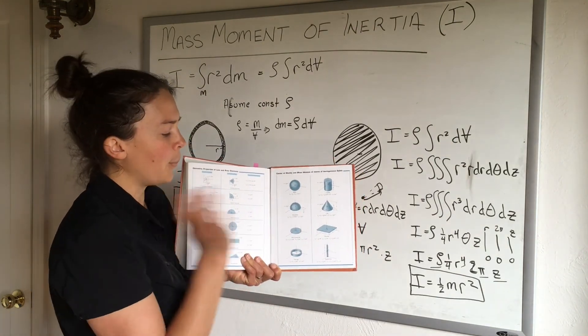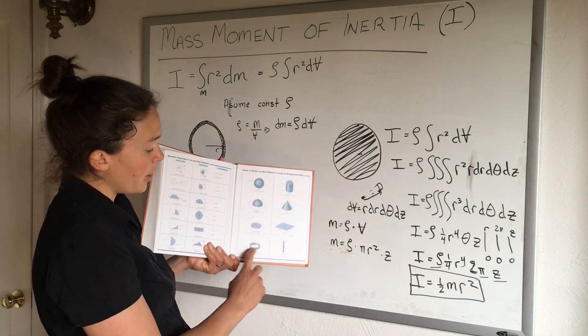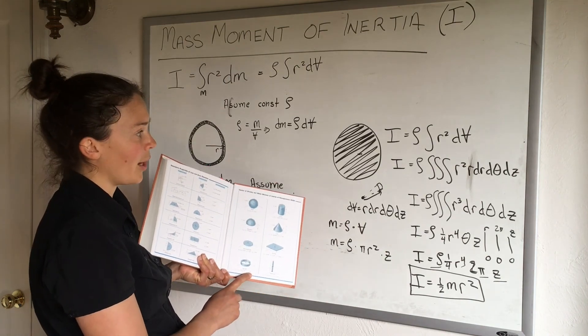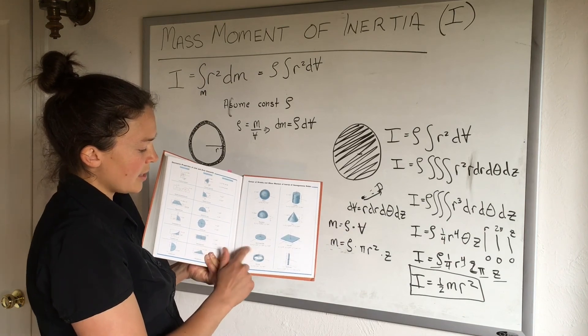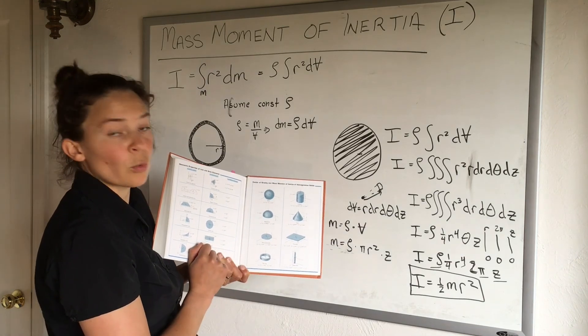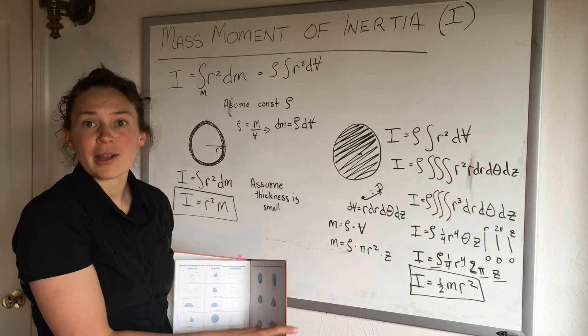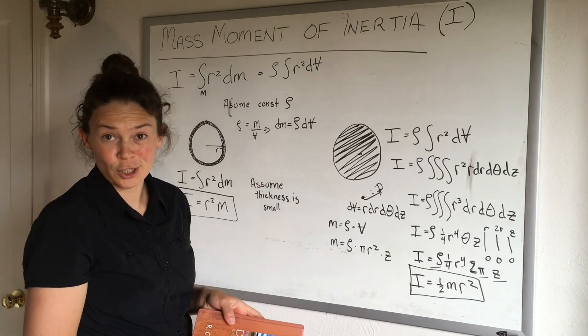So you can see the thin ring—it says the mass moment of inertia is mr²—and for the cylindrical disc or circular disc it says the mass moment of inertia is (1/2)mr². So they agree with the same answers I got, and those are some of the basics of calculating the mass moment of inertia.